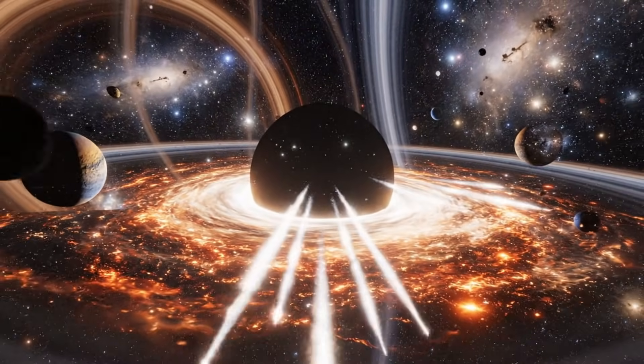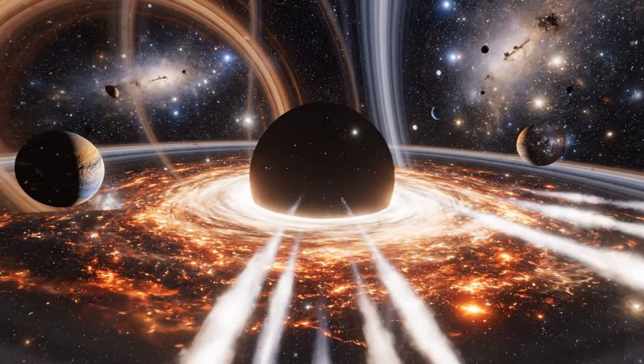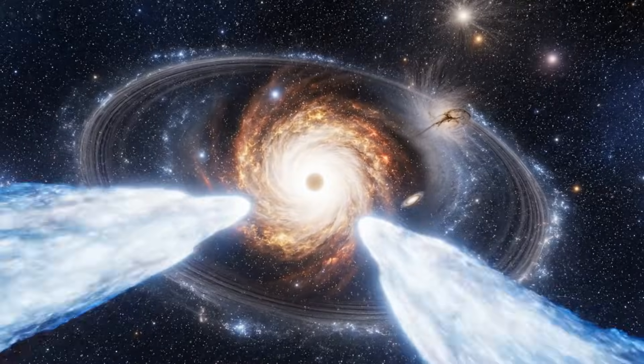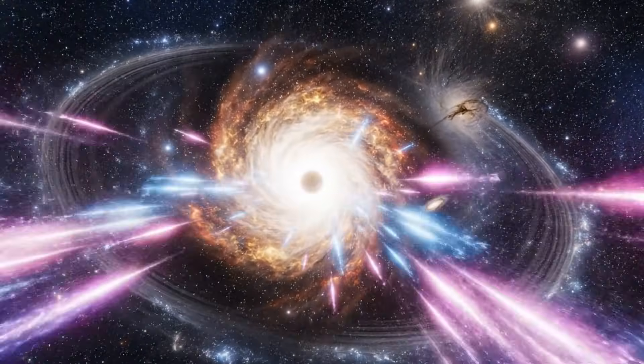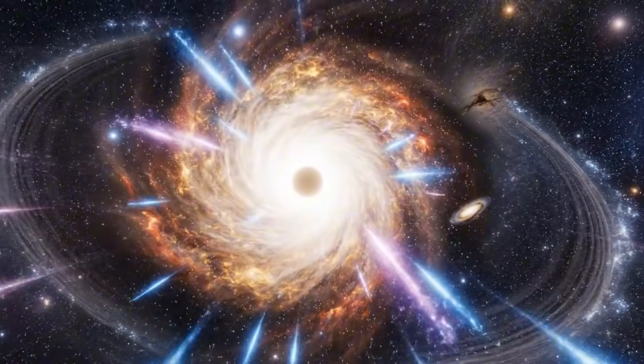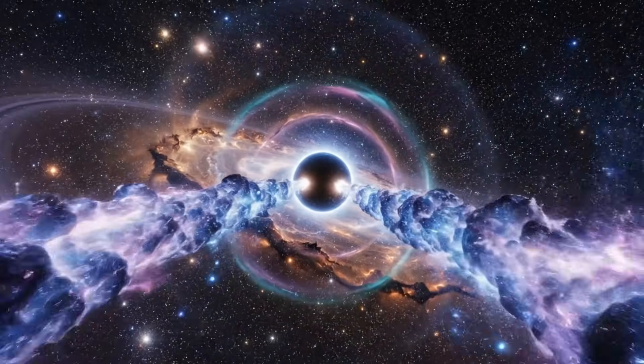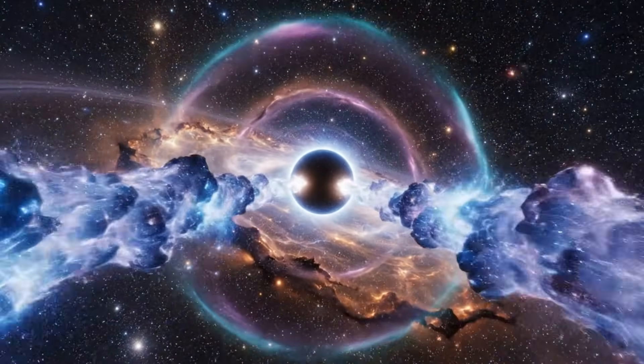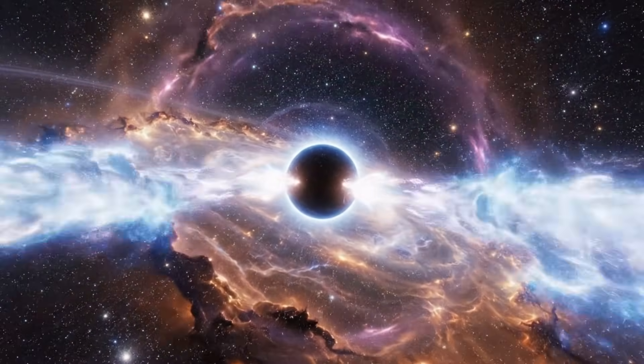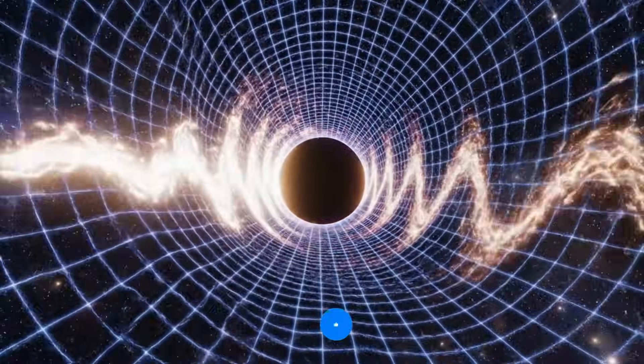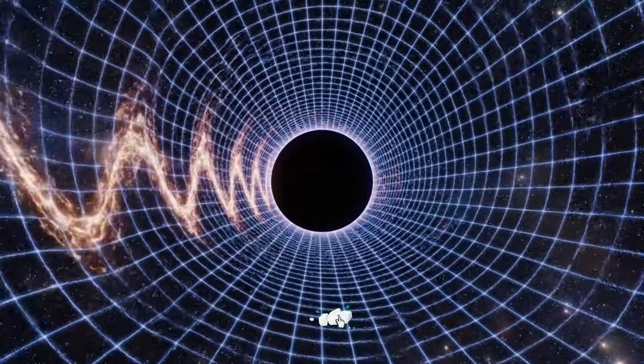The true scale of Ton 618 begins to reveal itself when astronomers calculate the size of its event horizon. The Schwarzschild radius stretches to nearly 1,300 astronomical units, which means the diameter of its shadow spans close to 390 billion kilometers. Numbers like these rarely land in the human mind, so it helps to compare.